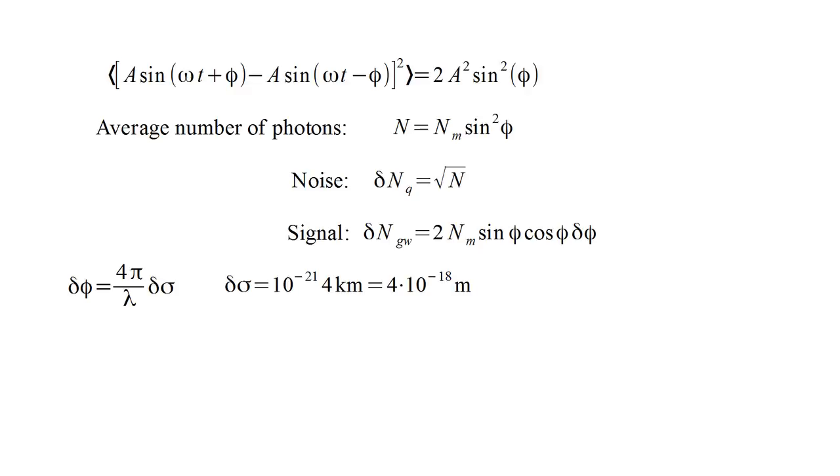For a gravitational wave with amplitude 10 to the minus 21, the length change of the 4 kilometer arms is 4 times 10 to the minus 18 meters. That's less than one hundredth the diameter of a proton. A change so small that it would seem hopeless to detect. And indeed, for decades, conventional wisdom was that it would be practically impossible to detect a gravitational wave. With an optical wavelength of about one micron, the resulting phase change is only about 5 times 10 to the minus 11.